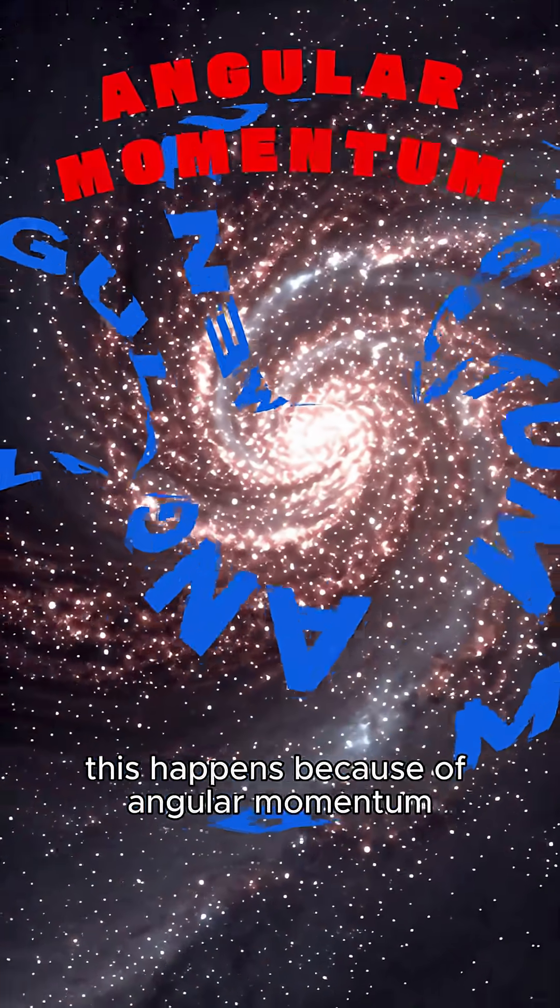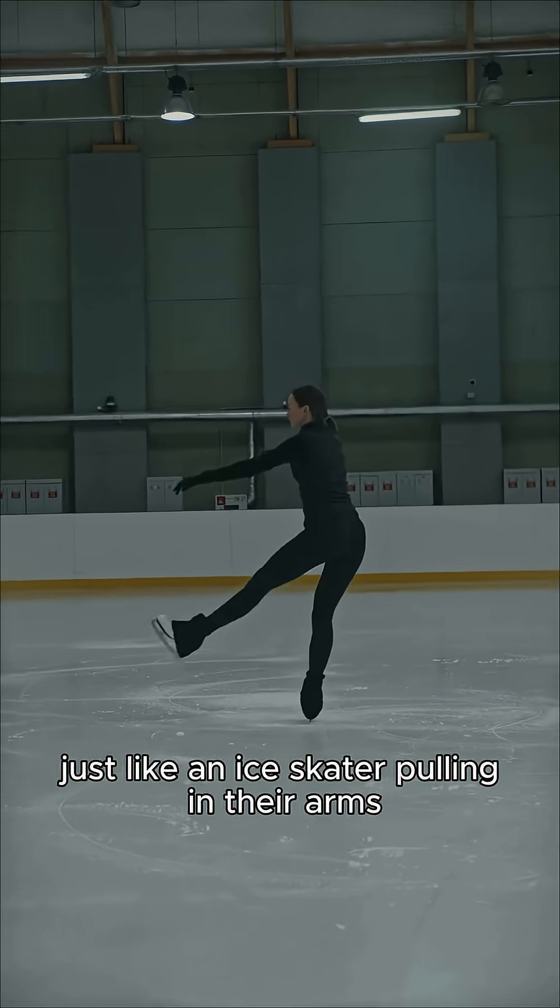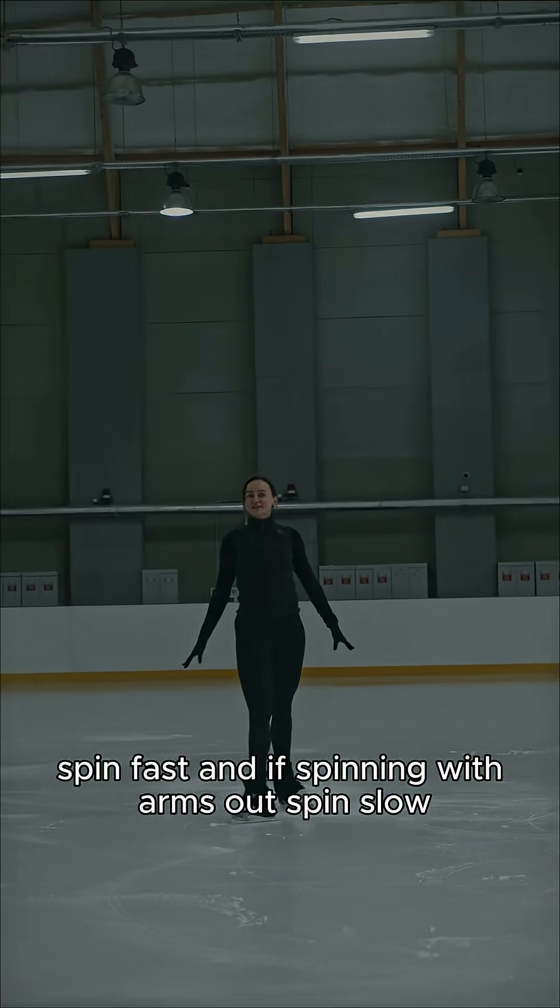This happens because of angular momentum, a fundamental rule of motion, just like an ice skater pulling in their arms. Spin fast, and if spinning with arms out, spin slow.